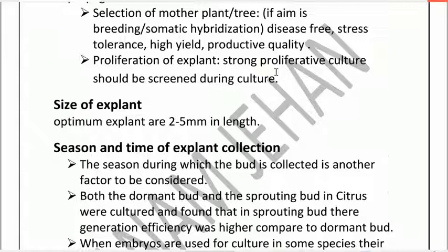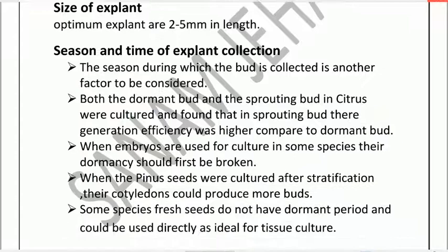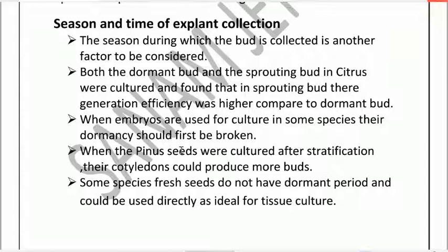The best season is spring when buds are more formed. Sprouting buds give higher culture efficiency as compared to dormant buds. In dormant buds, growth is reduced or stopped, while sprouting buds have active growth. These are the key points about explants. If you have any questions, you may ask.